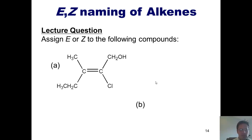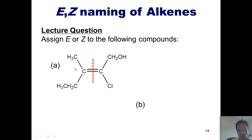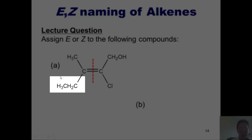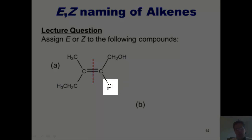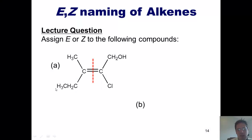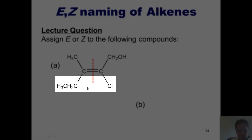In this example, I'm asked to determine if this is E or Z. I draw a dashed line right down the carbon-carbon double bond and look at the two substituents on the left — I've got a carbon and a carbon. They tie, so I move out one atom: one goes to hydrogen, the other goes to carbon. Carbon has a higher atomic number than hydrogen, so the substituent bonded to the additional carbon is higher priority on the left side. On the right side, I've got a carbon and a chlorine — chlorine has the higher atomic number, so it's the higher priority on the right. Both higher-priority groups are on the same side of the alkene, therefore this is a Z alkene.